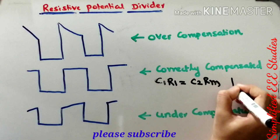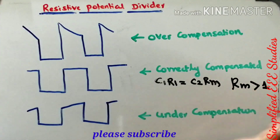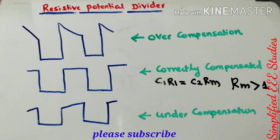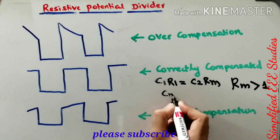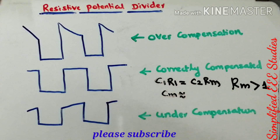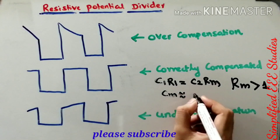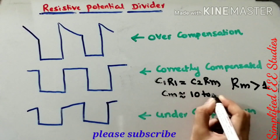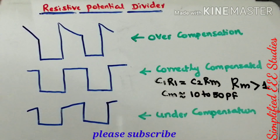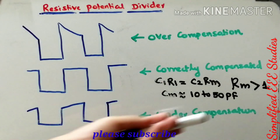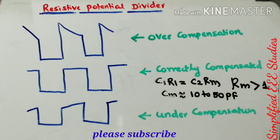The value of Rm should always be chosen such that it is greater than 1. Moreover, the value of meter capacitance Cm is approximately equal to 10 to 50 picofarads, where 1 picofarad equals 1 × 10⁻¹² farad. You should choose the parameter values within this range so that you obtain a properly compensated network.